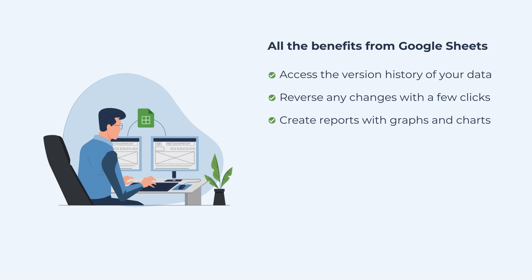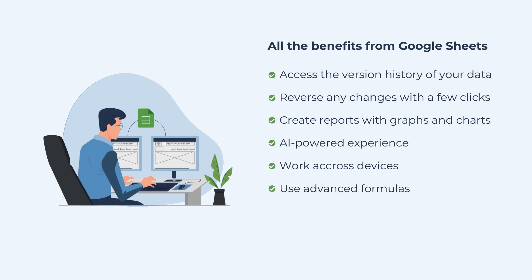Besides, you can turn your WordPress content management into an AI-powered experience by using all the Google Sheets AI tools. Since Google Sheets allows you to work across devices, you can manage your WordPress content from your laptop, smartphone, tablet, or any other device with access to Google Sheets. You can use advanced formulas to calculate and edit values in Google Sheets and collaborate with your team to manage all your WordPress content in one place.